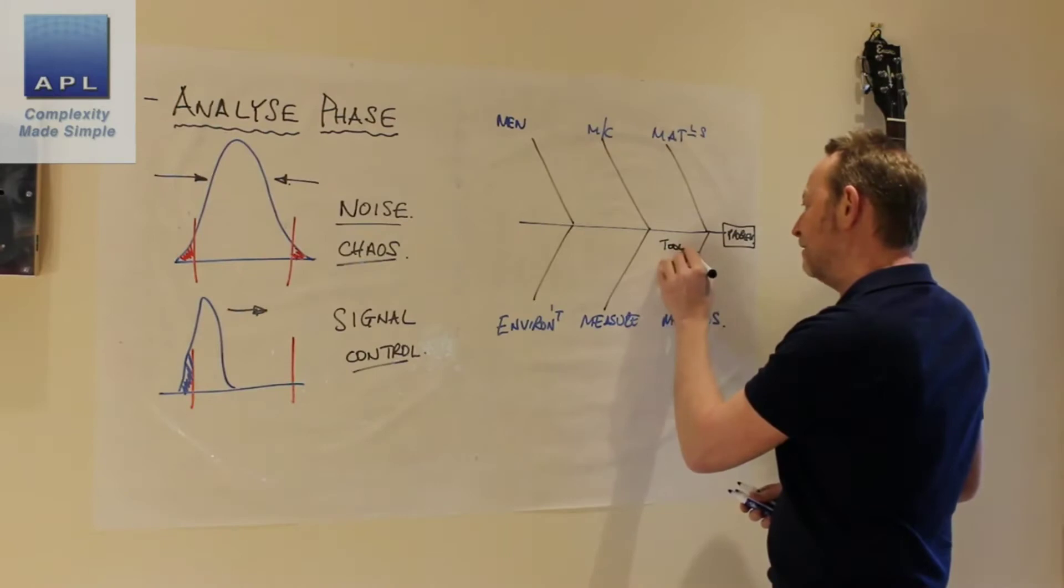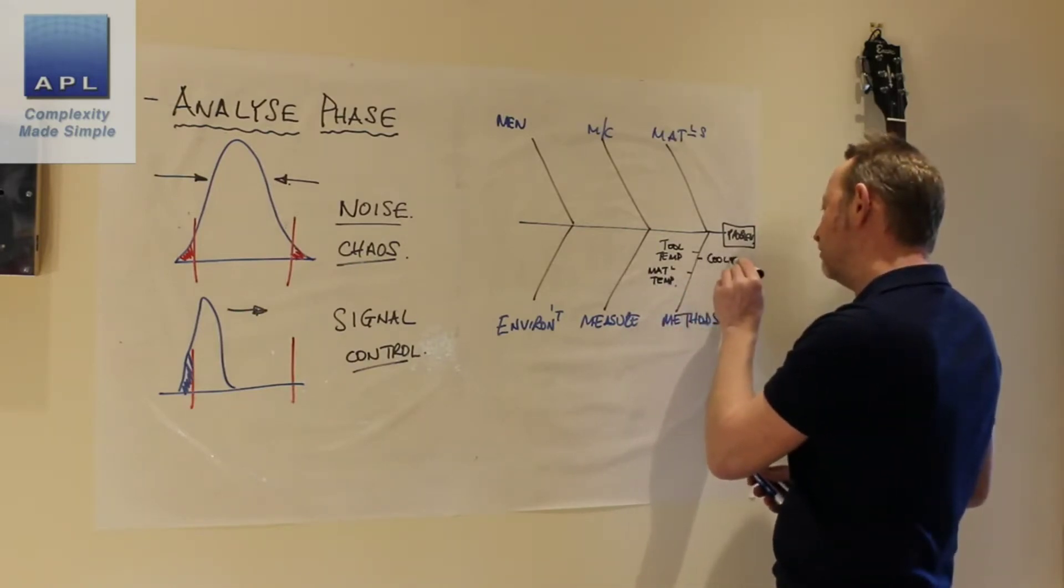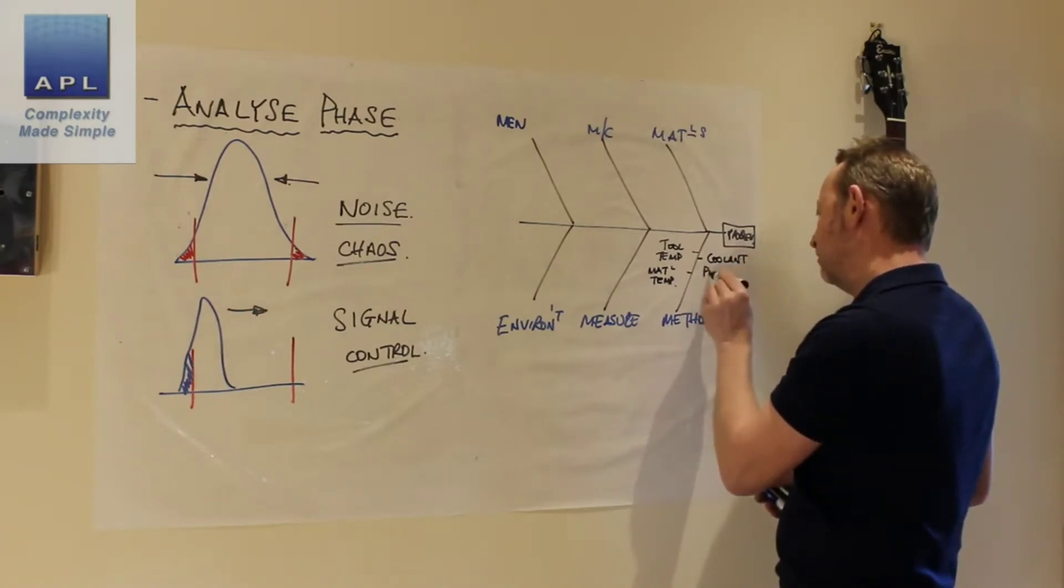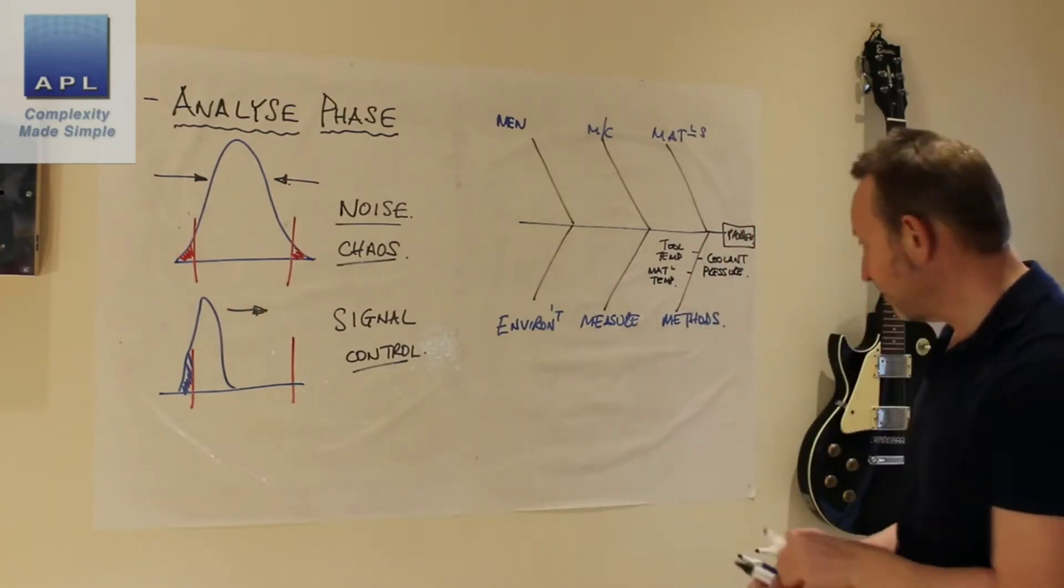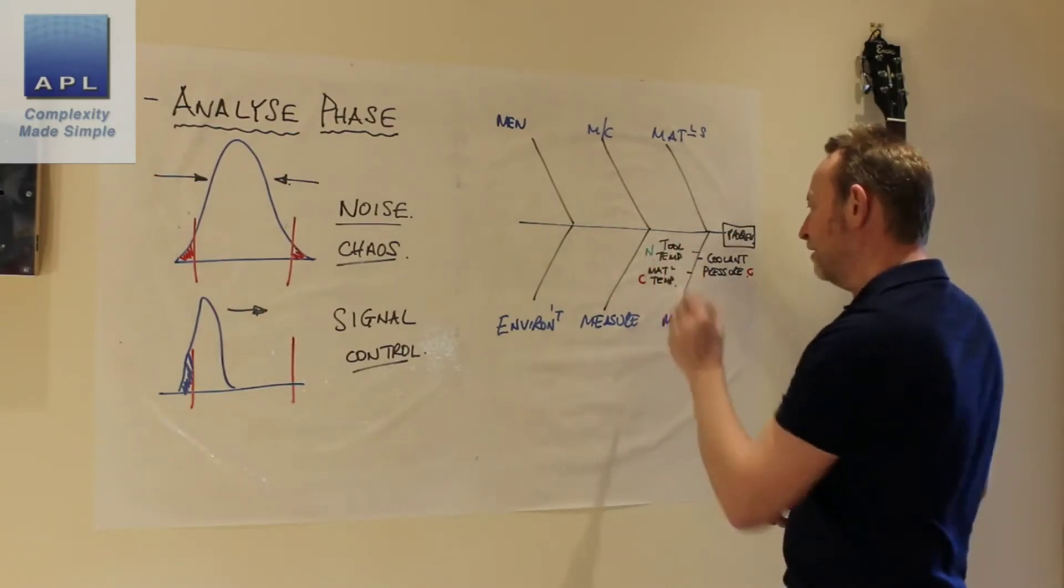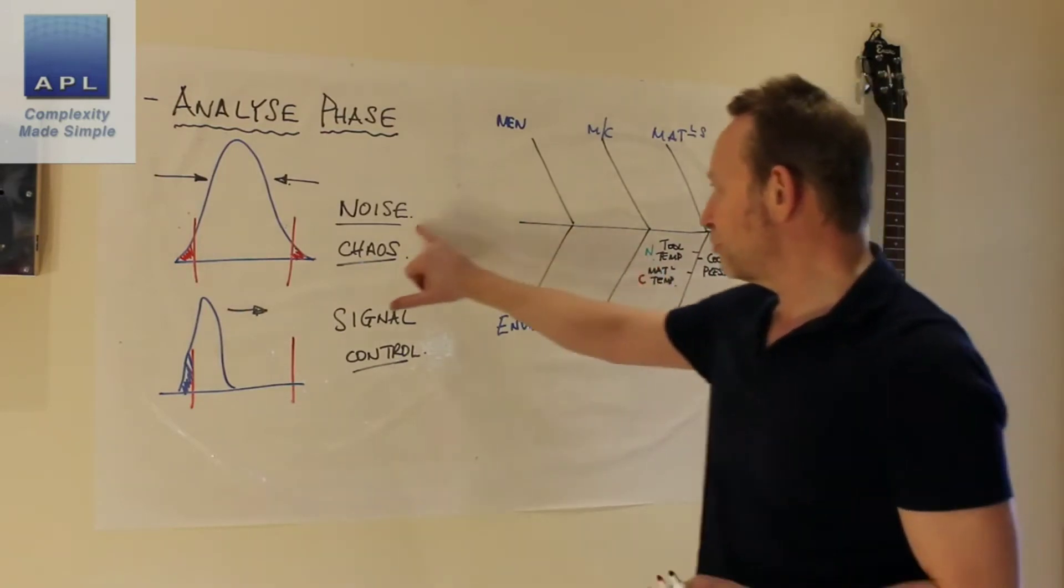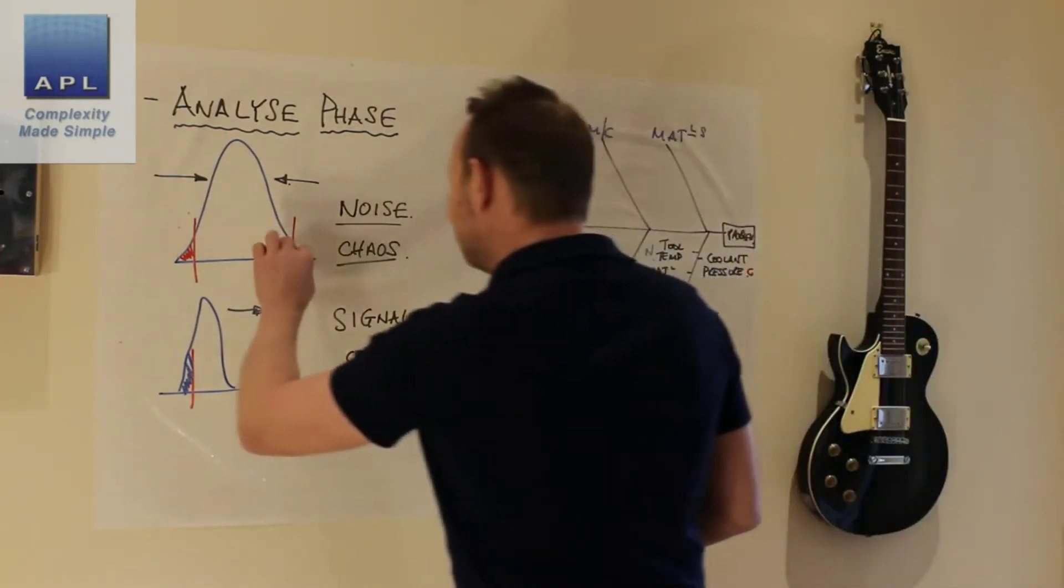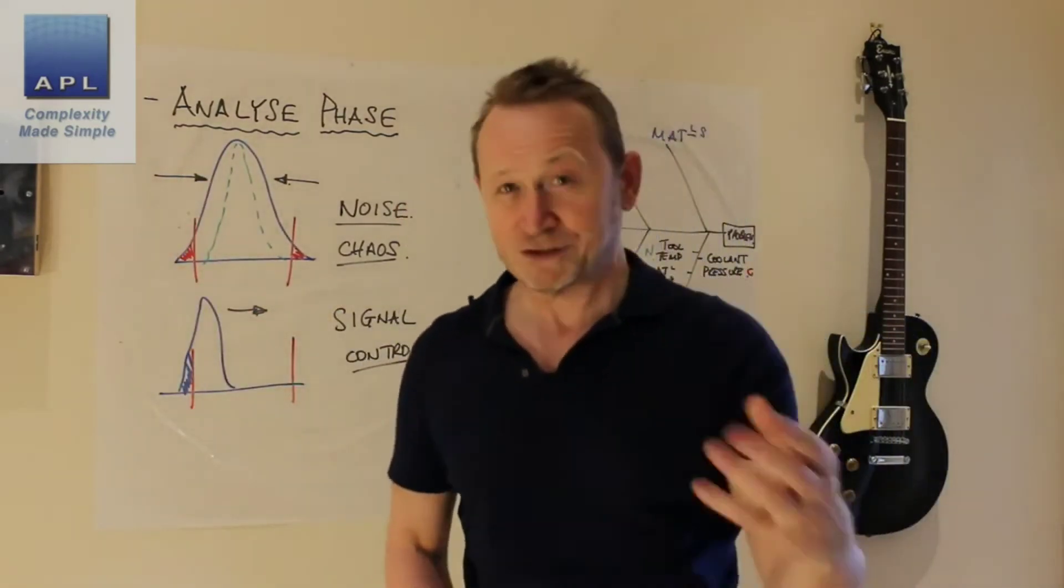So under methods it might say tool temperature, it might say material temperature, it might say coolant pressure, etc. And what you're trying to ascertain is whether these are under control, which would be with a C, or whether they're out of control, which would be N for noise. And what you're going to do where you have noise, you remove it. And if you remove noise, what will you do? It'll change the capability, it'll pull those tails in and fix your problem.